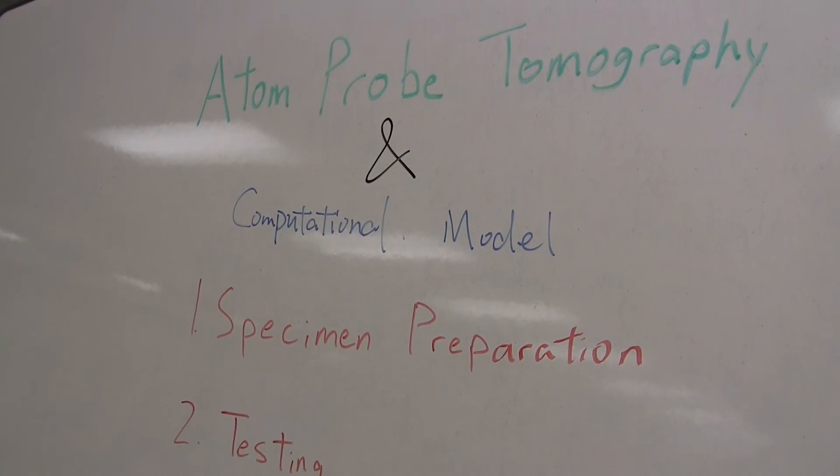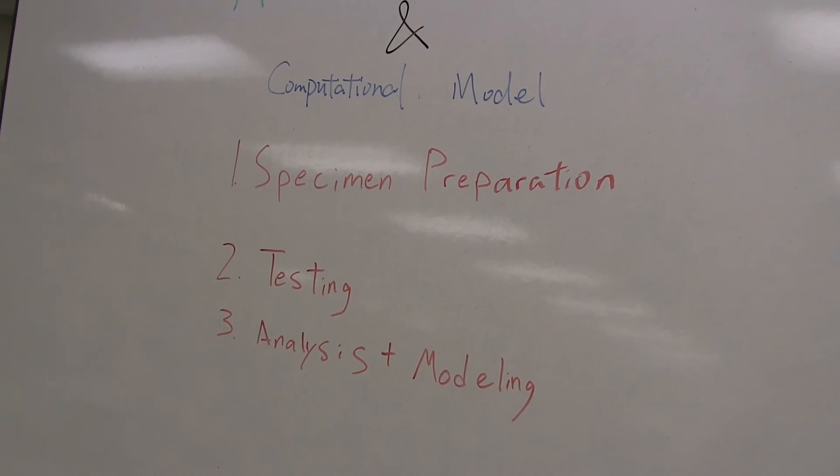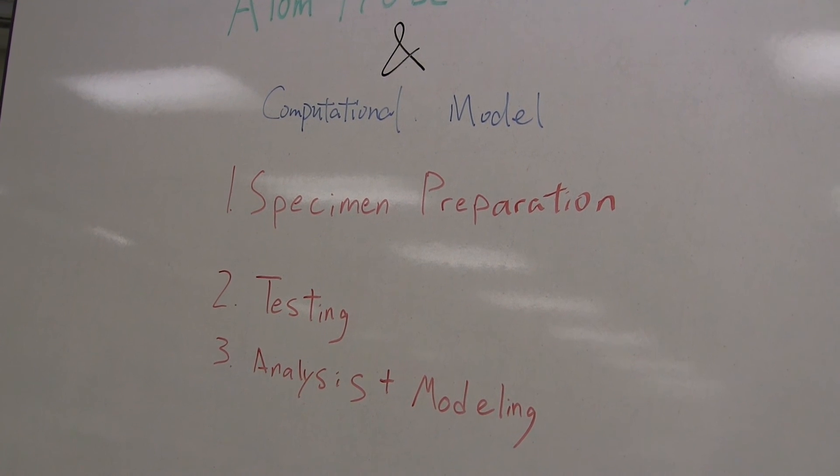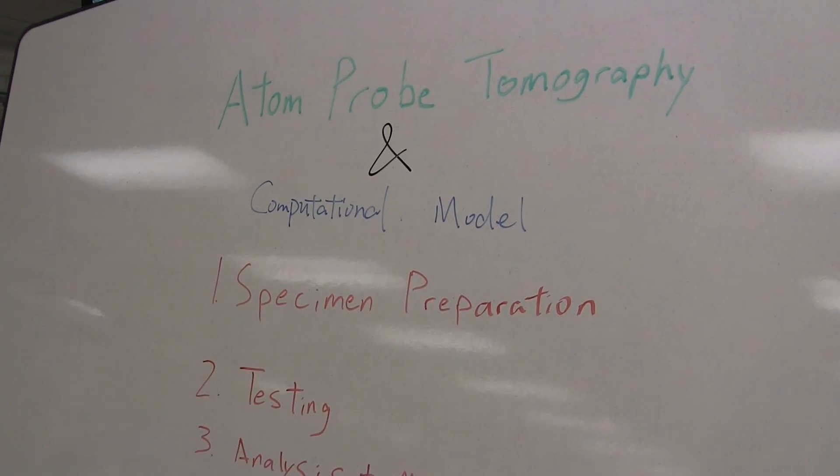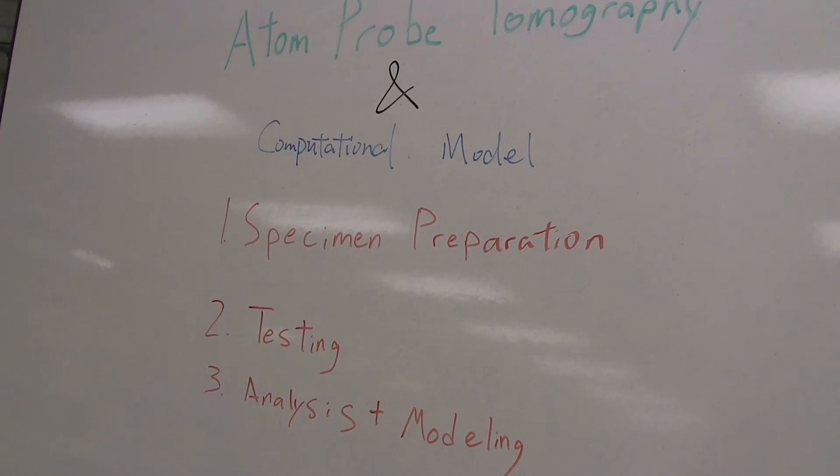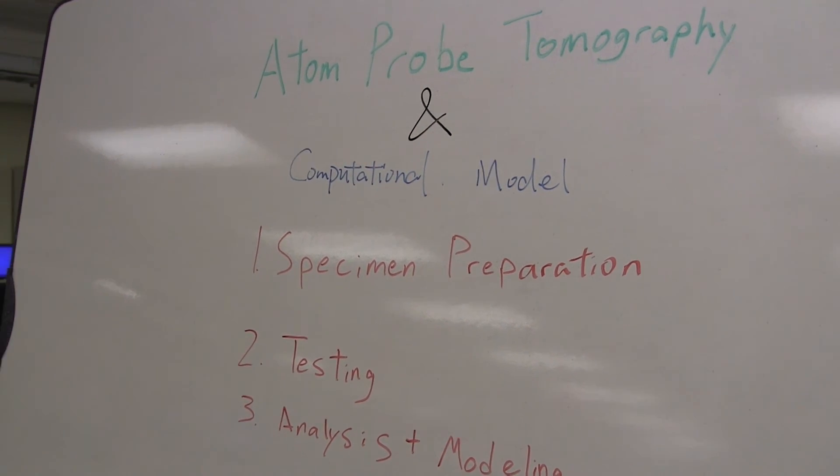So during our time in the marquee group, there were three steps to our research. First was sample preparation, second was testing, and the third was analysis and modeling. And these three steps introduced us to atom probe tomography and its computational models, which shows us how powerful a characterization method it is.